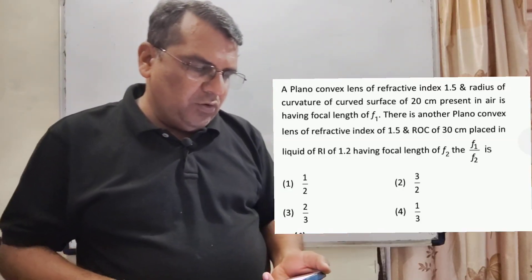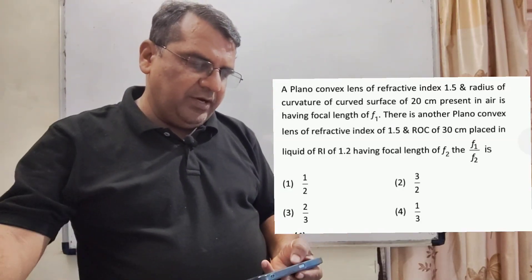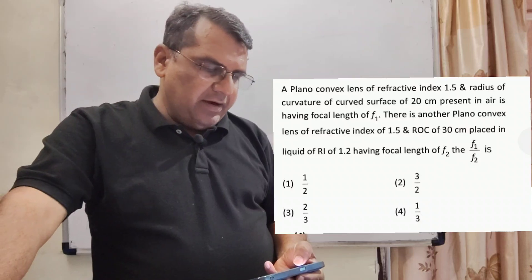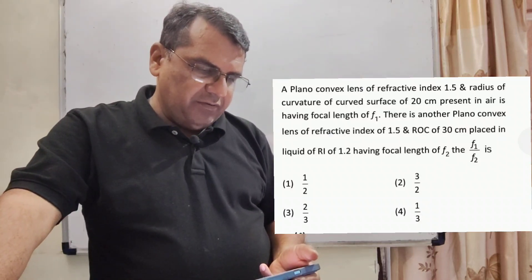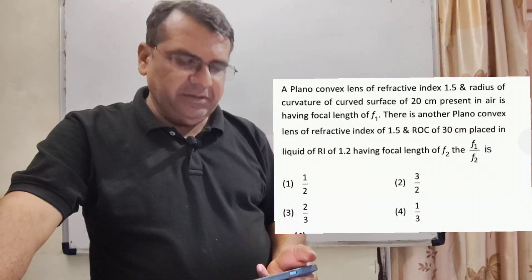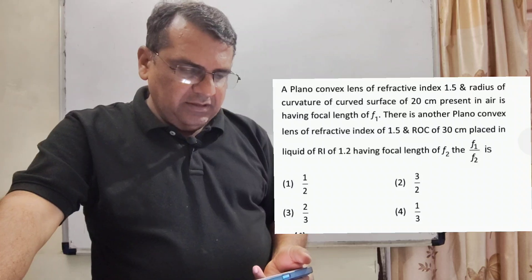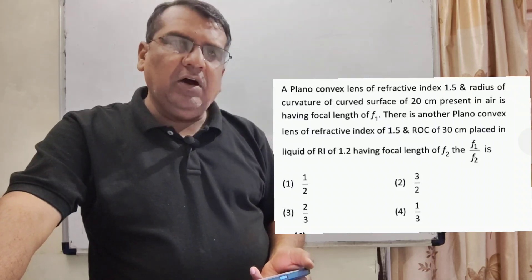Now here is the question. A plano convex lens of refractive index 1.5 and radius of curvature of curved surface of 20 cm present in air is having focal length of f1.